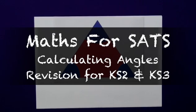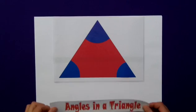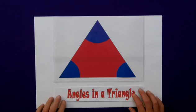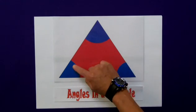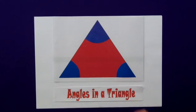We already know that angles on a straight line add up to 180 degrees. And it's this knowledge that I'm going to use to prove that the interior angles, the inside angles of any triangle, also add up to 180 degrees.